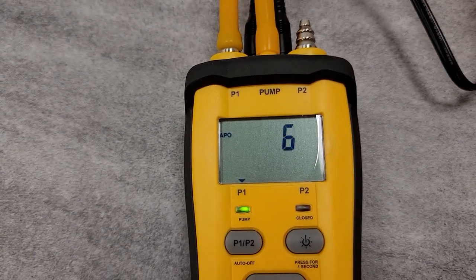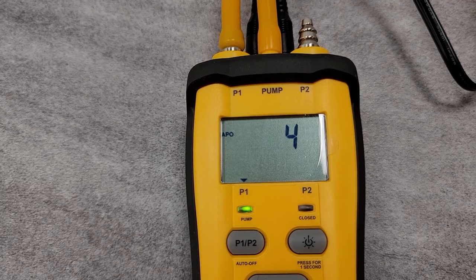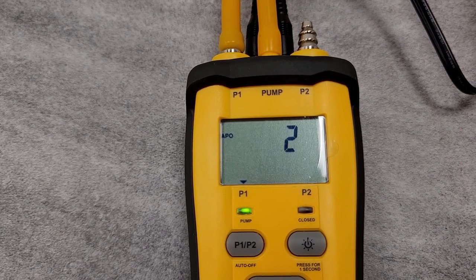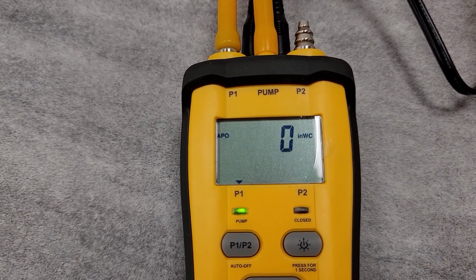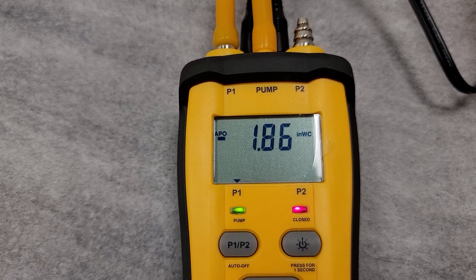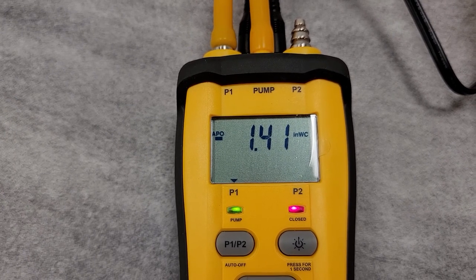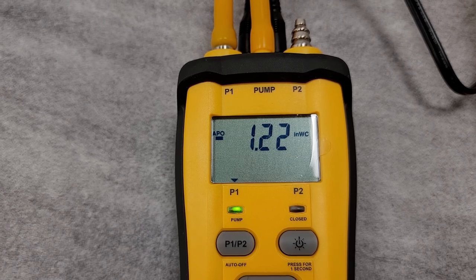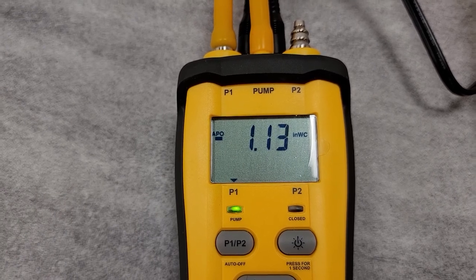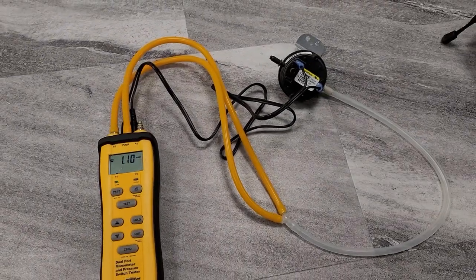This will show me when that switch is closed. Keep in mind, 1.40 inches water column. You can see the switch is closed, but as soon as we hit 1.32, the switch opened back up. So the pressure switch is actually fine.